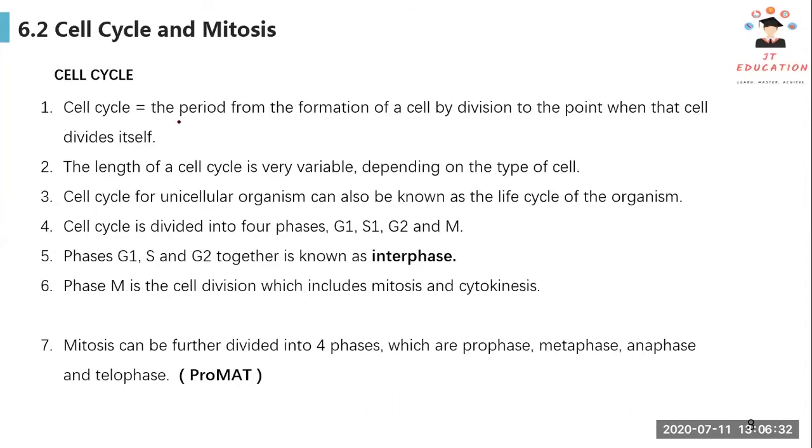So what is cell cycle? Cell cycle is the period from the formation of a cell division to the point where the cell divides itself. Before a cell divides, one cell will actually divide into two cells. So before that it divides, this is the cell cycle.